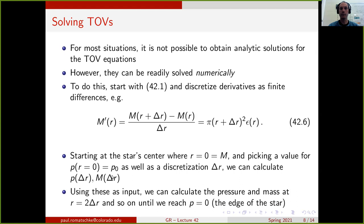There is some picking involved: one choice is the central pressure p₀, which has physical meaning. There is also an unphysical choice of the discretization Δr. One has to make sure that the end result does not depend on the choice of Δr. Typically, one has to show that for at least two values of Δr, the results obtained for the star's radius and mass are essentially unchanged — unchanged within some small tolerance.